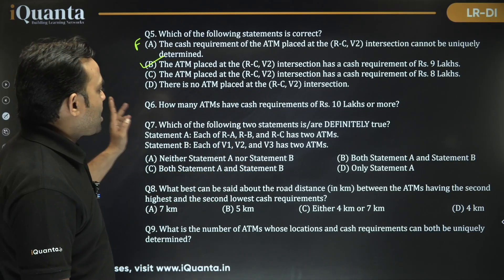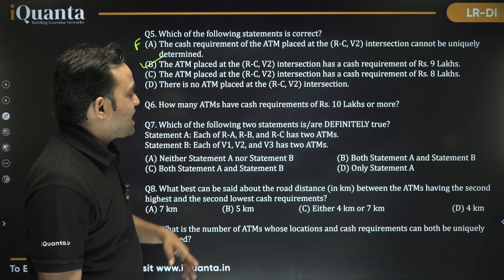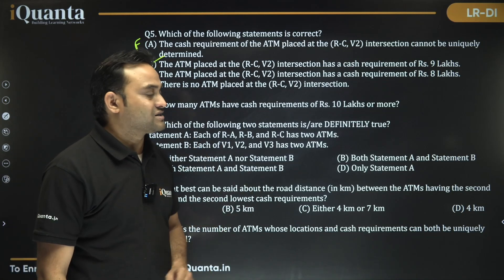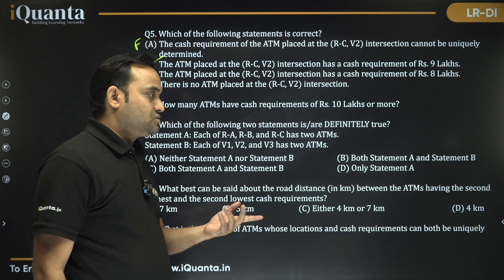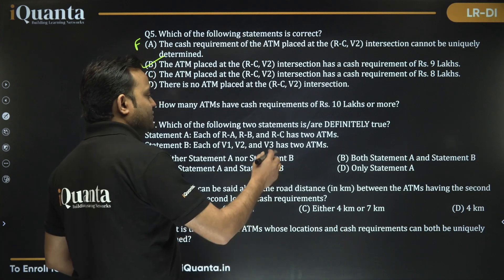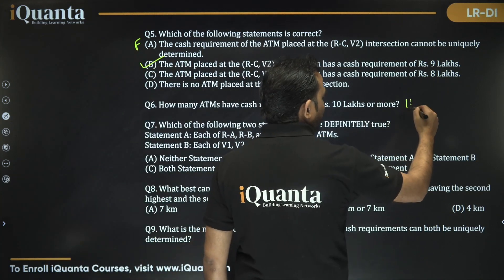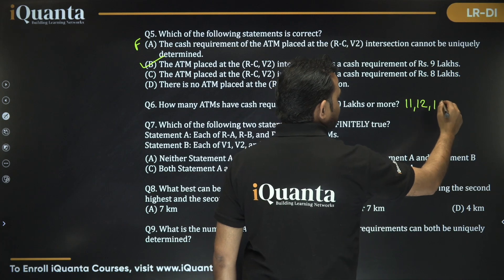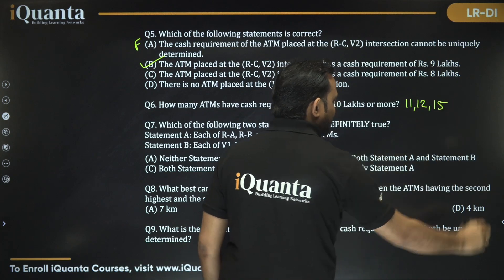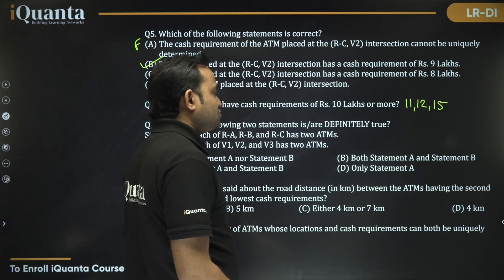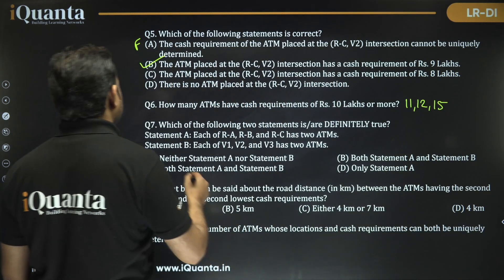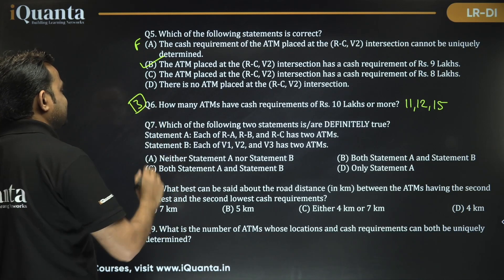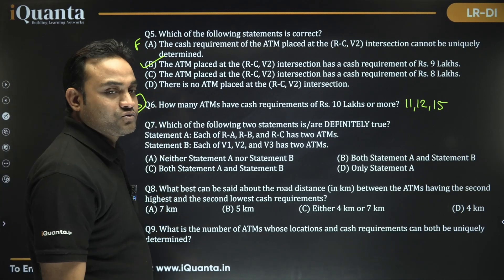Question 6: How many ATMs have cash requirements of 10 lakhs or more? From our solution, the values 11, 12, and 15 are all 10 lakhs or more. So the answer is exactly three ATMs.